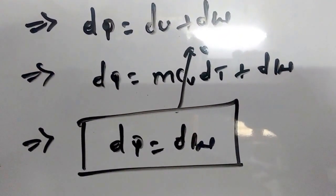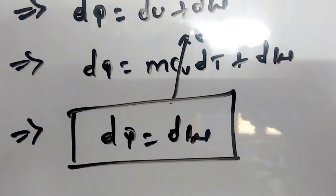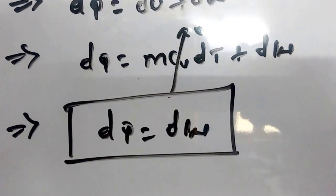From the above equation, we can conclude that the heat transport that takes place in an isothermal process for an ideal gas equals the work transport that takes place.